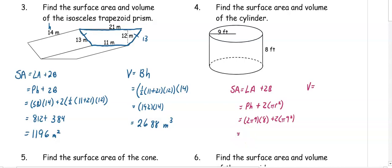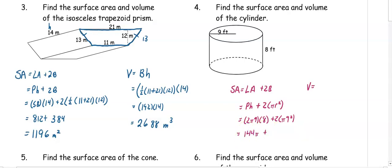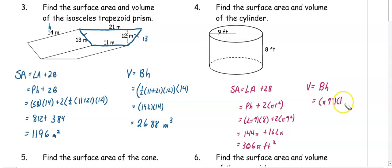So 2 times 9 times 8 is 144 pi. And then 9 squared is 81 times 2, which is 162 pi. So when we add those together, we get 306 pi meters squared. For volume, it's the base area times the height. The base area is pi times 9 squared times the height of 8. So we get 81 pi times 8, which is 648 pi meters cubed.